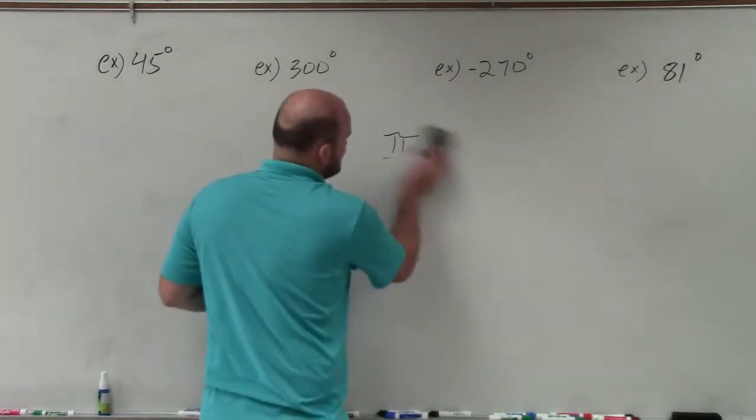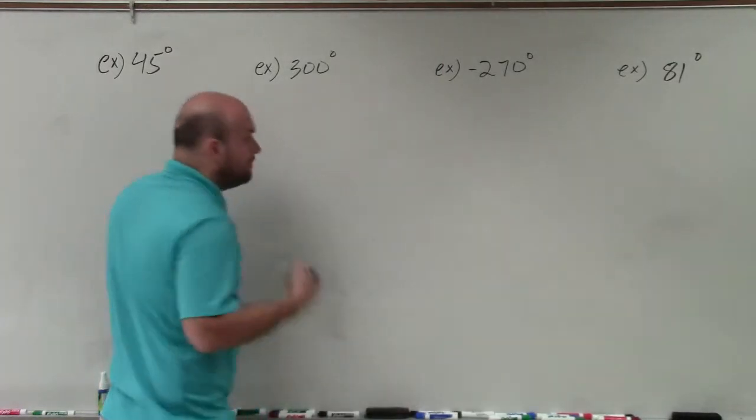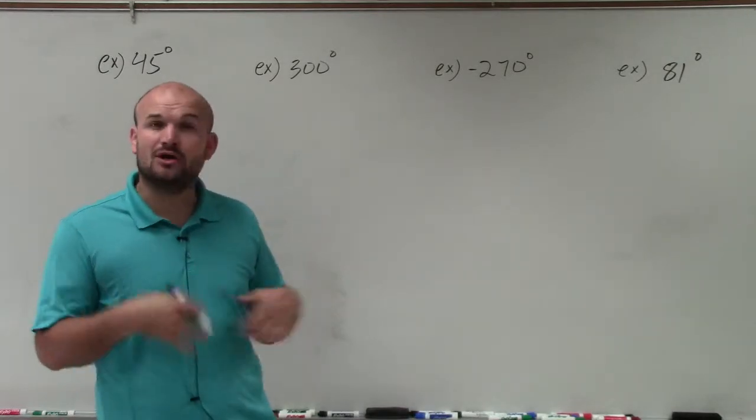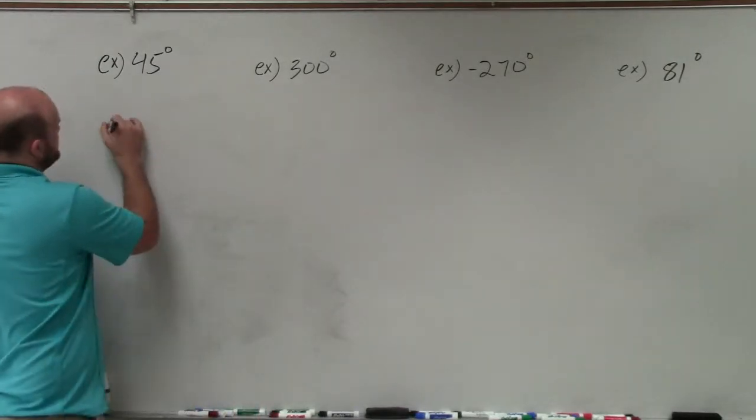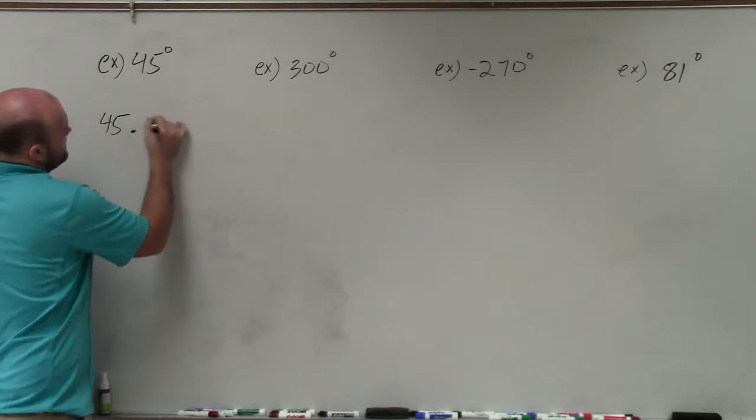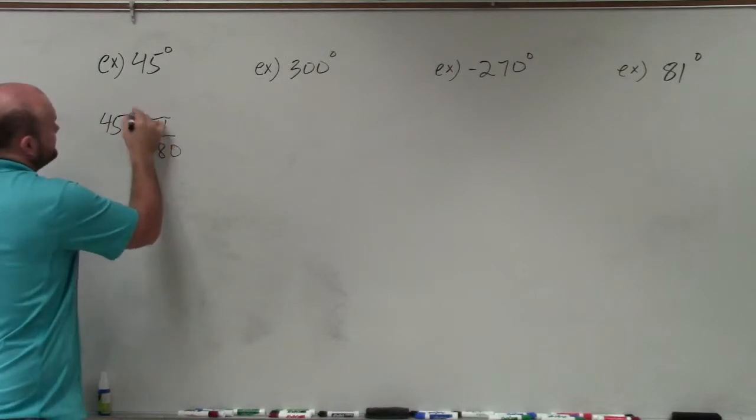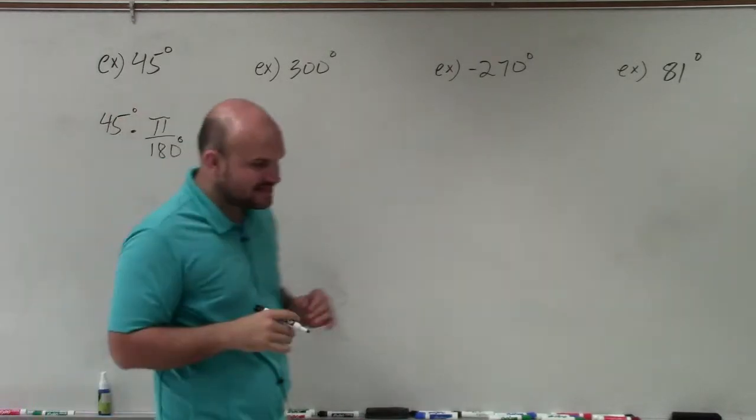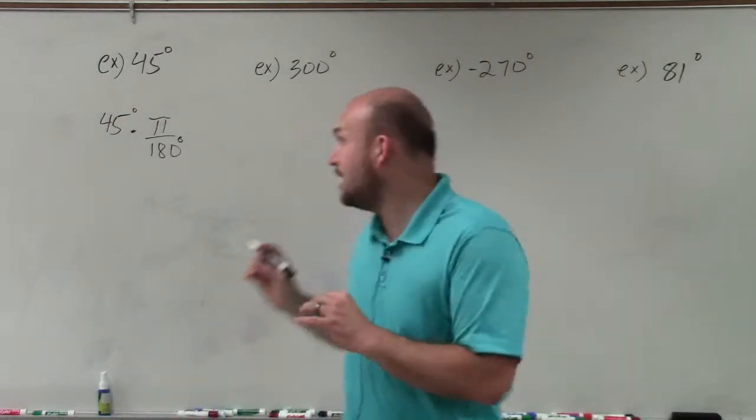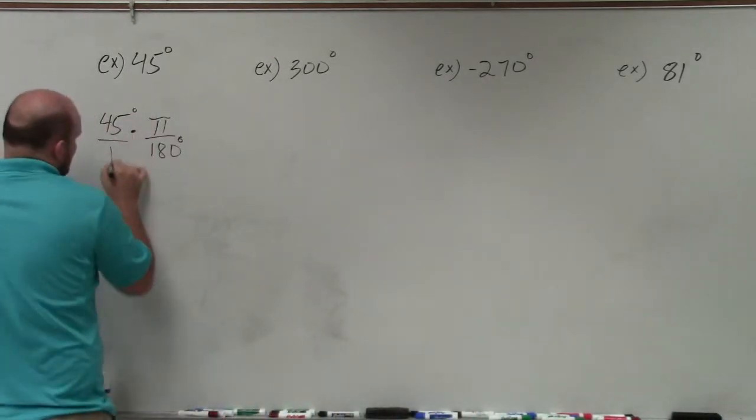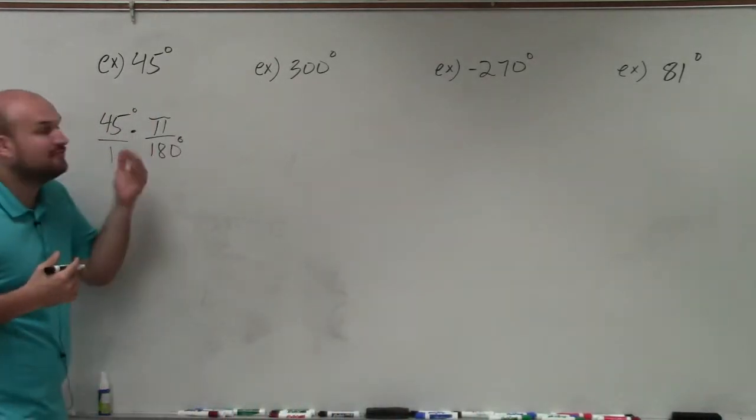So what I'm going to do for each of these problems is I'm simply just going to multiply by pi over 180 to therefore represent our angle in radian form. So first of all, I'll take 45 times pi over 180. Now, it's very important that we represent that 45 degrees can be written as a fraction over 1 as well. So really, that's 45 over 1.